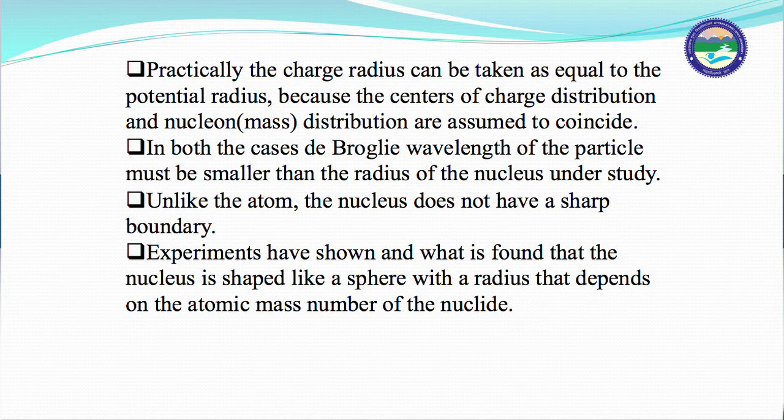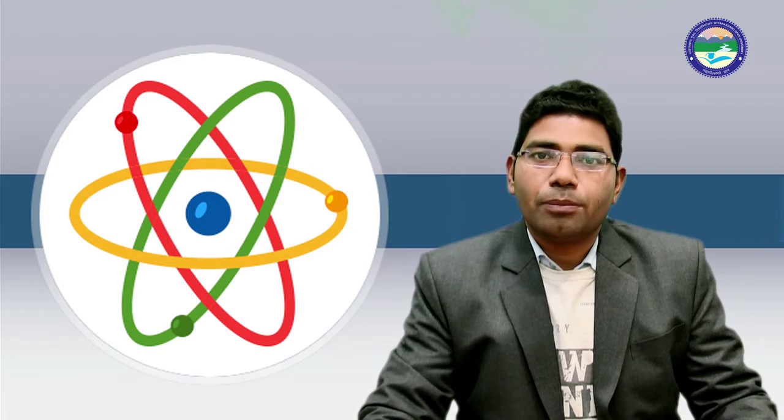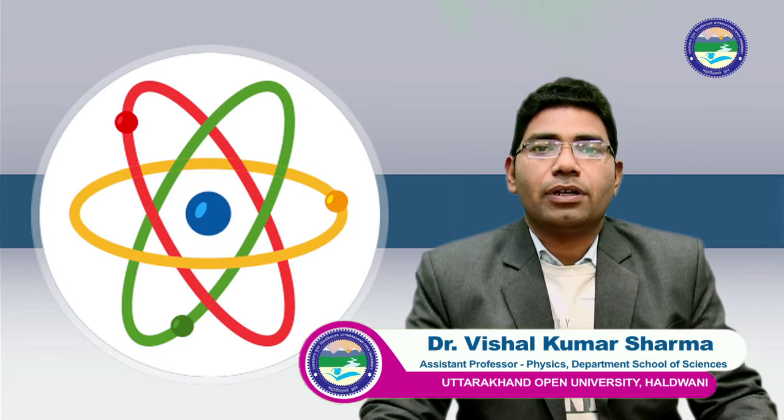In both cases, the de Broglie wavelength of the particle must be smaller than the radius of the nucleus under study. Unlike the atom, the nucleus does not have a sharp boundary. From experiments we have shown that the nucleus is shaped like a sphere with a radius that depends on the atomic mass number of that nuclide. Nuclide is the combination of protons and neutrons.